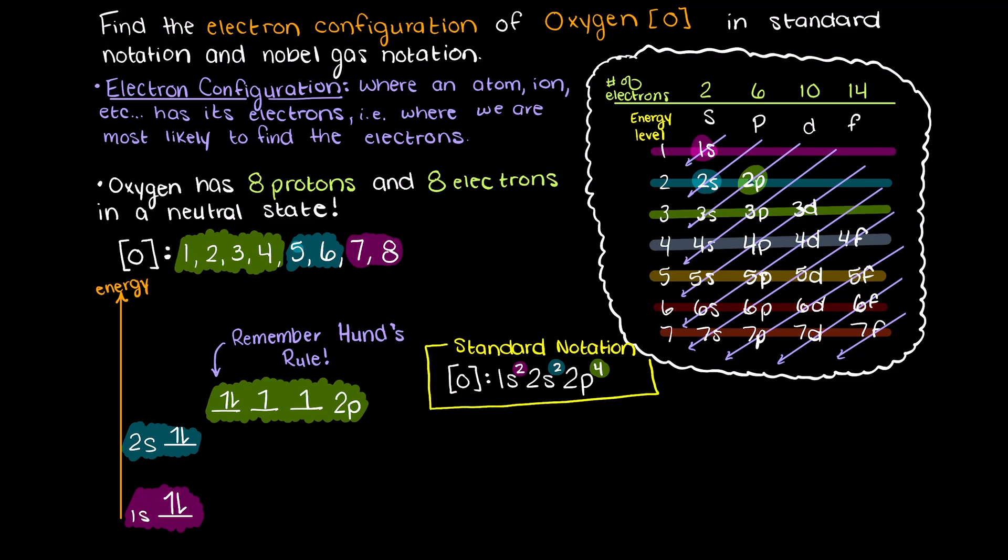The noble gas underneath oxygen is helium, which has 2 electrons and a standard electron configuration of 1s2. Therefore we can substitute this portion of our standard electron configuration notation and rewrite it to convert it into our noble gas notation.